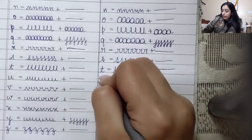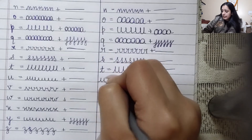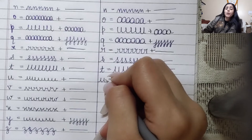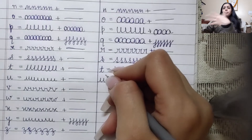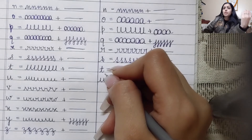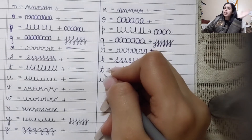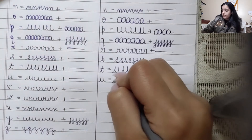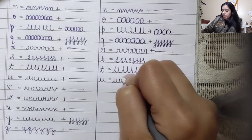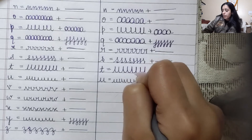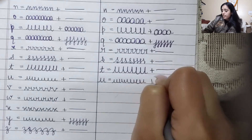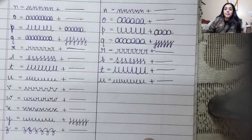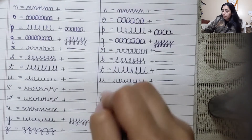Coming on to alphabet U — it's an easy one. These are not difficult to practice or understand; it's just something basic. We'll write U in a spiral — this is the small U we are working upon. Make sure it goes in a straight line. Coming on to alphabet V.